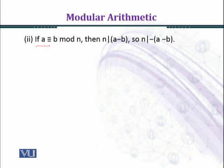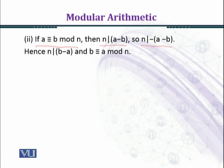If a is congruent to b modulo n then by definition of congruence n divides a minus b. We know that n divides minus a minus b. We can write minus a minus b equal to b minus a. It implies that n divides b minus a and b is congruent to a modulo n. Congruence is satisfying symmetric property.